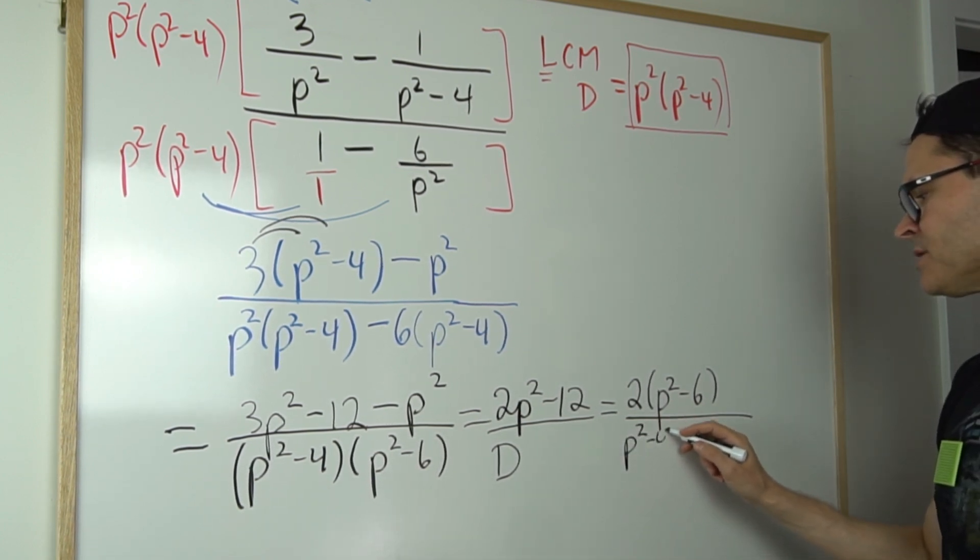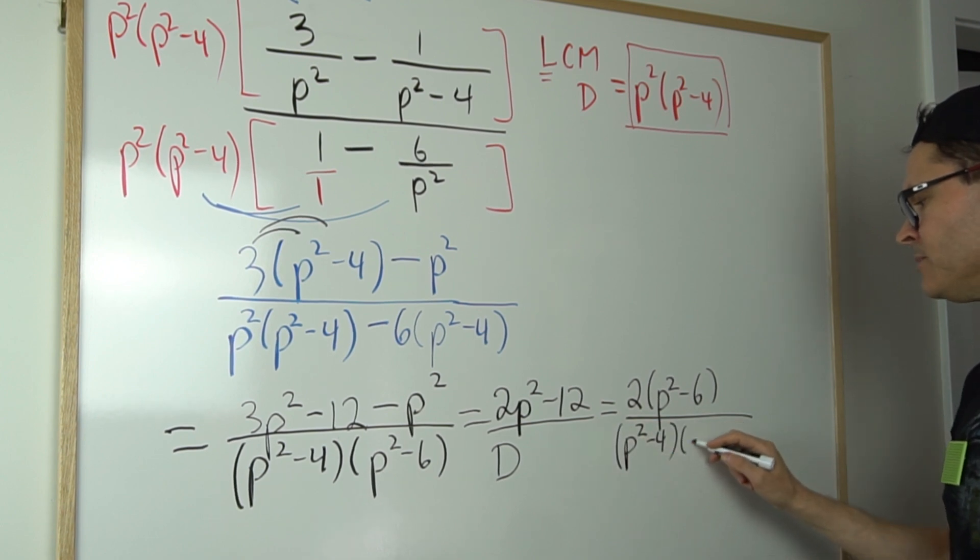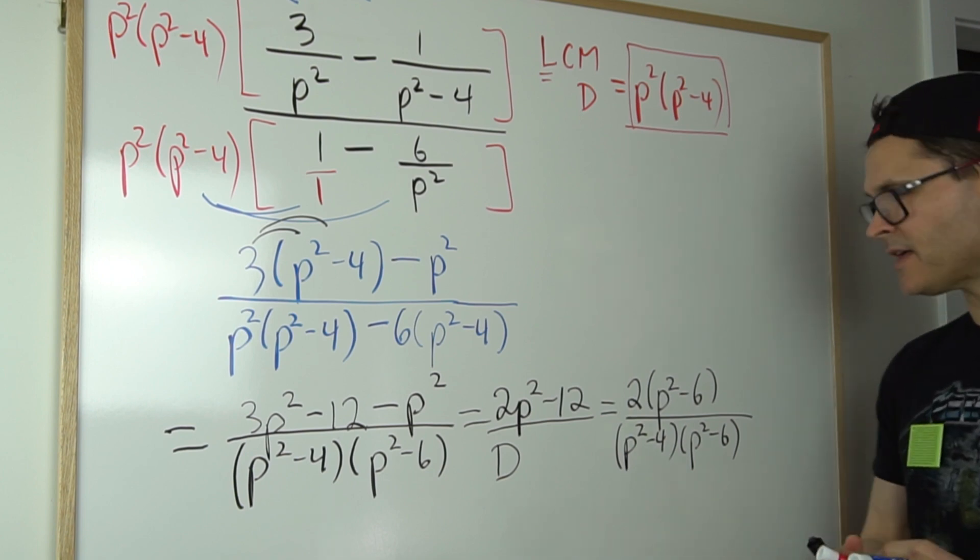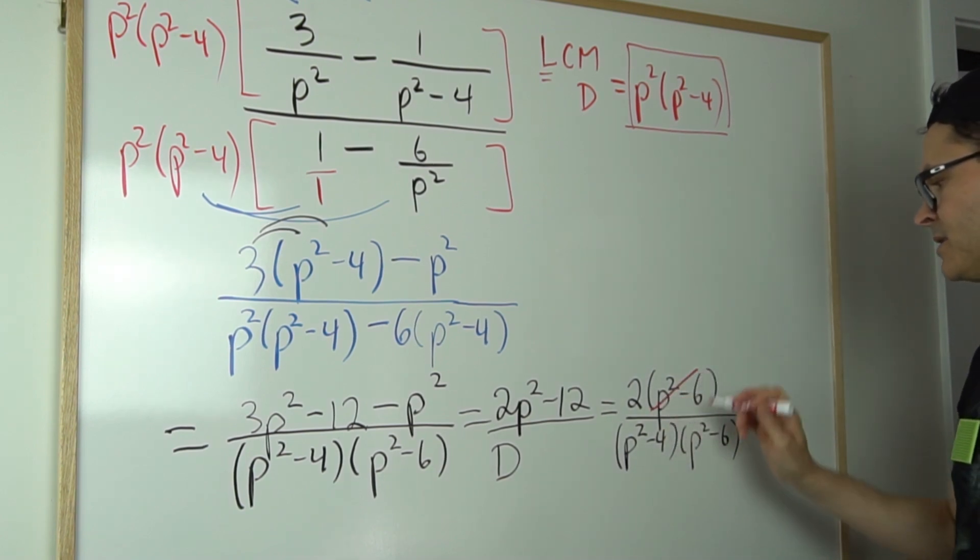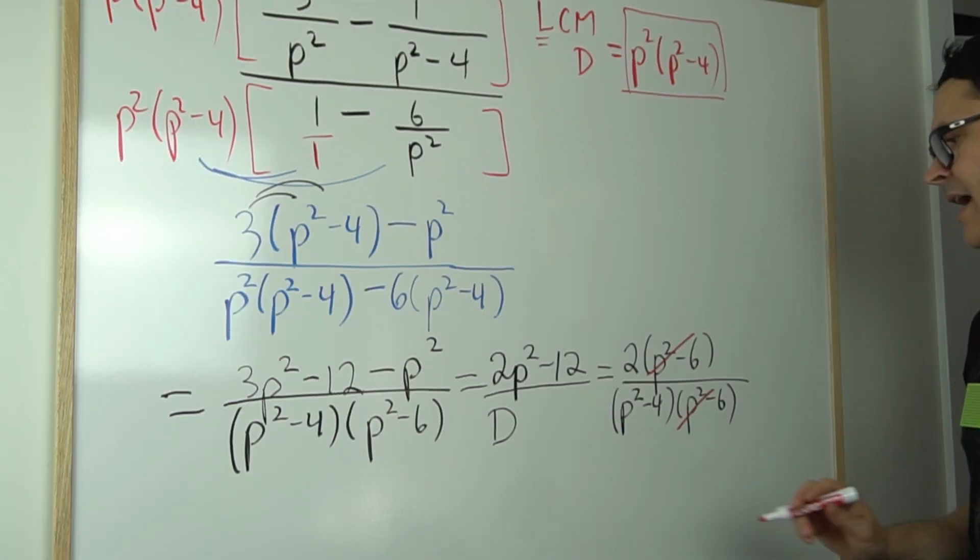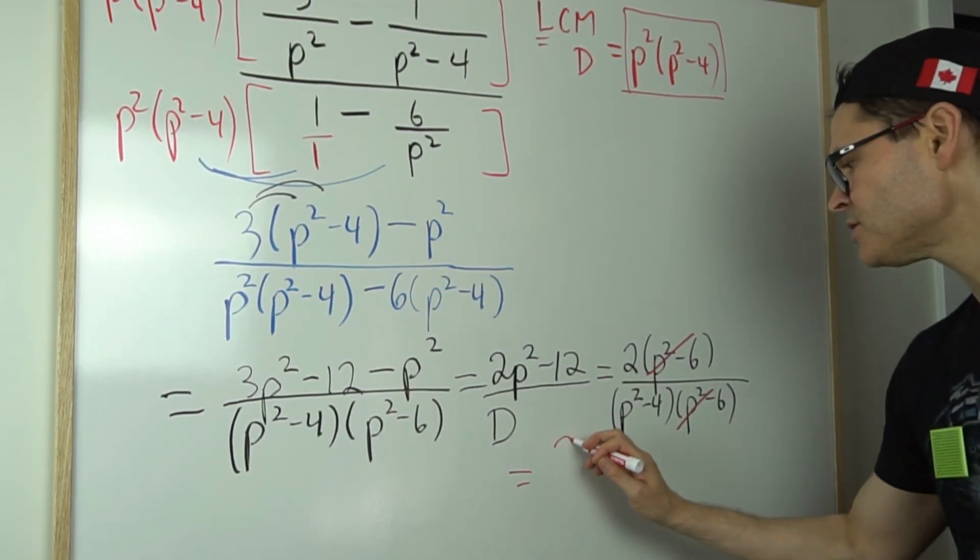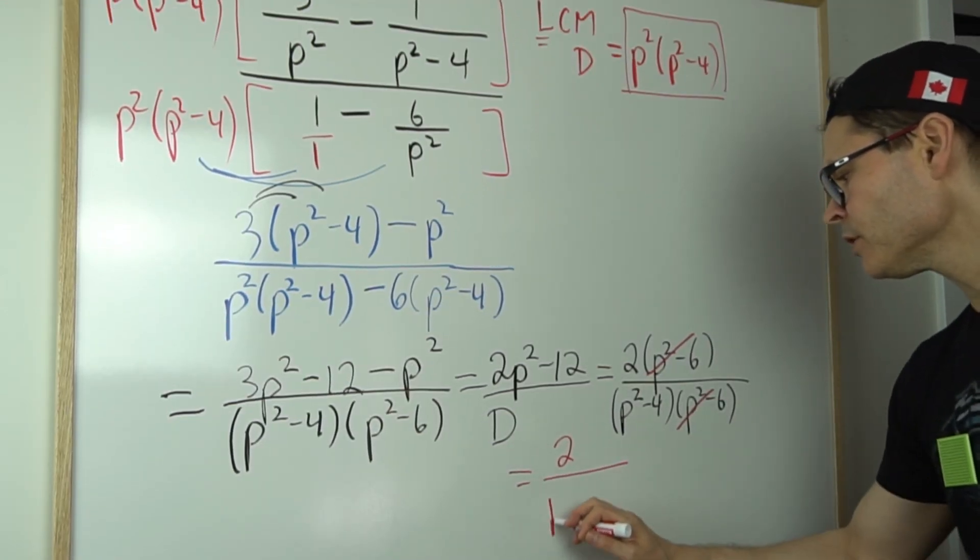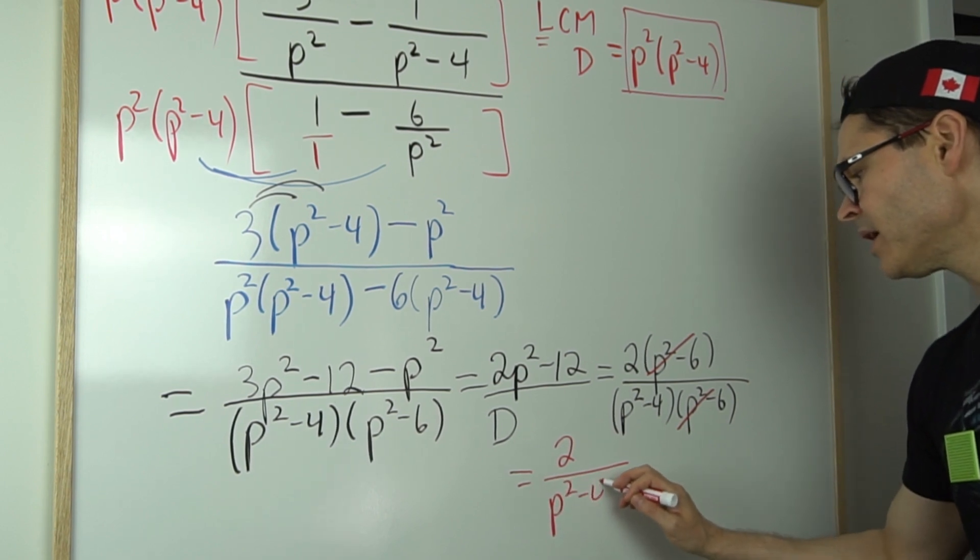I'm writing p squared minus six over the denominator, which I'll write as p squared minus four times p squared minus six. And this is kind of nice because look—you can see that these cancel. The p squared minus sixes cancel, and that simply leaves a two over p squared minus four.